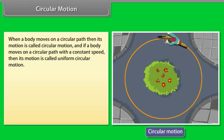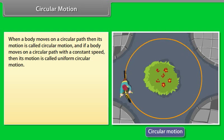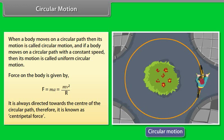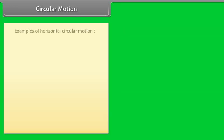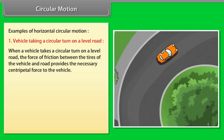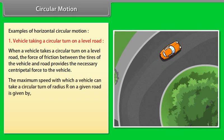Circular Motion: When a body moves on a circular path, its motion is called circular motion. If a body moves on a circular path with constant speed, it is called uniform circular motion. The force on the body is F = mv²/R, always directed towards the center of the circular path, known as centripetal force. Example 1 — Vehicle taking a circular turn on a level road: the force of friction between the tires and road provides the centripetal force. Maximum speed is given by V = √(μRg).